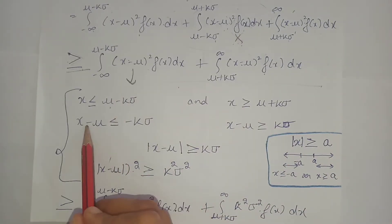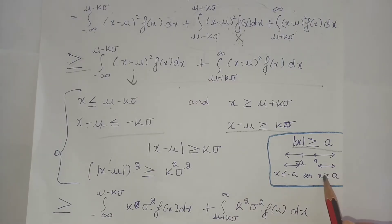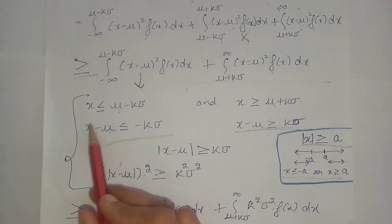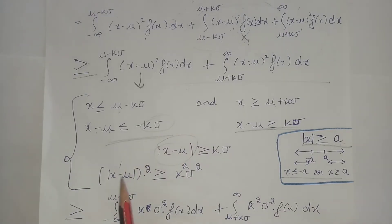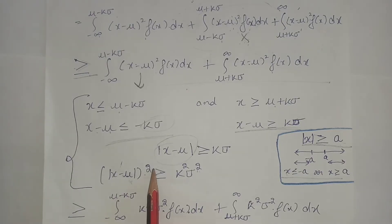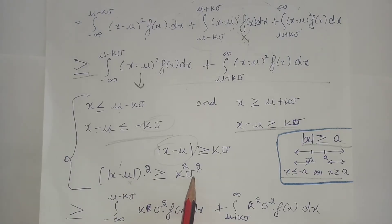We now introduce the term x minus mu. We use the core definition: if x is less than or equal to minus a, or x is greater than or equal to a, then the modulus of x is greater than or equal to a. Comparing both regions, we get that the modulus of x minus mu is greater than or equal to k sigma, which means x minus mu squared is always greater than or equal to k squared sigma squared.